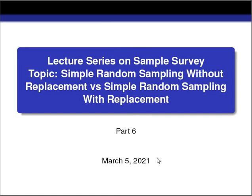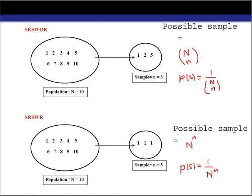Let's understand this with the help of an example — the same example from the previous video. Suppose we have a population of size 10 and we want to draw a sample of size 3. In that case there are 10C3 sample combinations. Now we are considering simple random sampling without replacement.